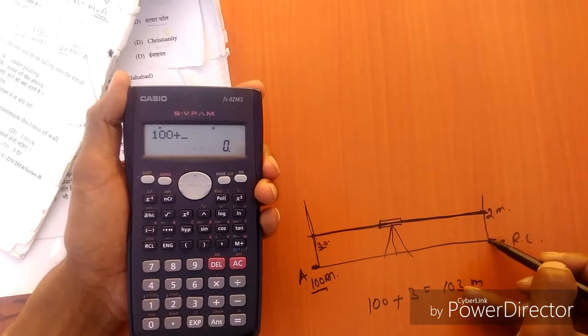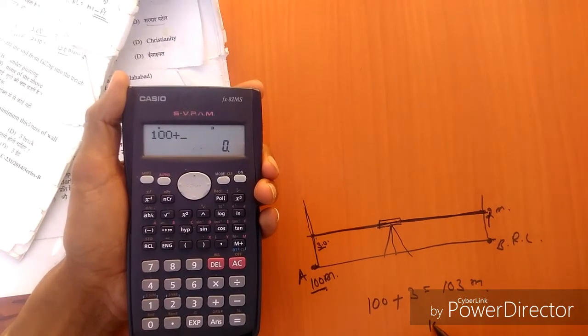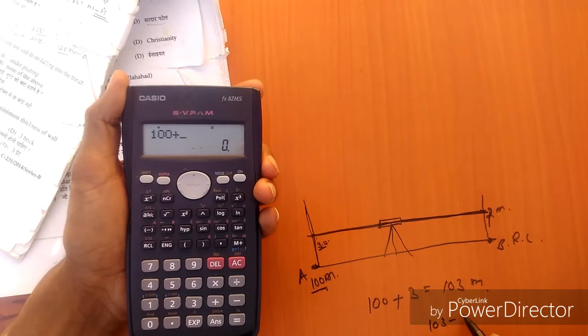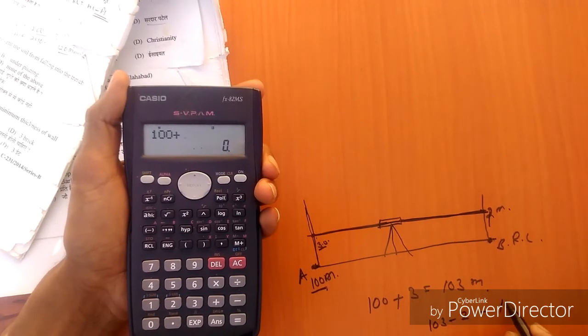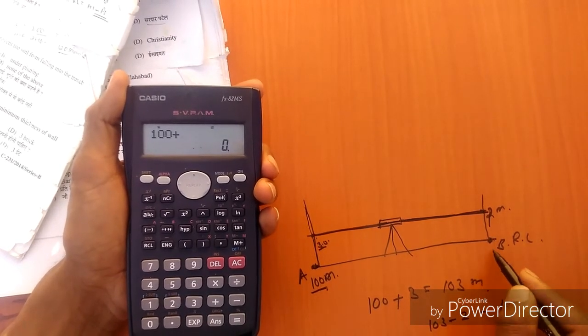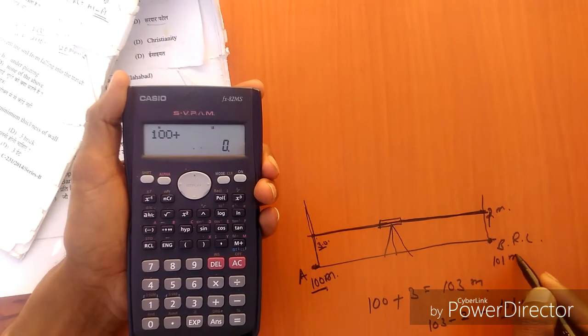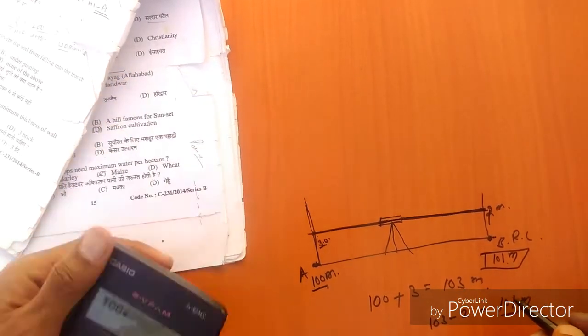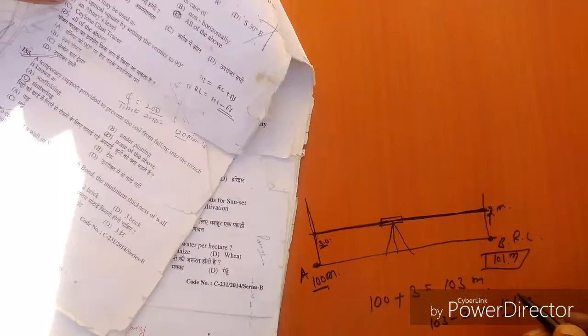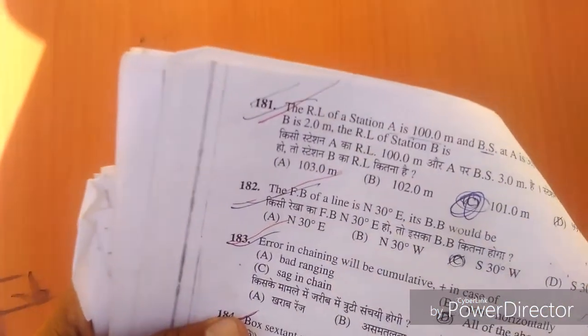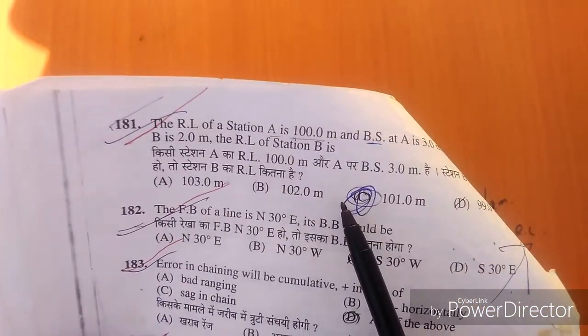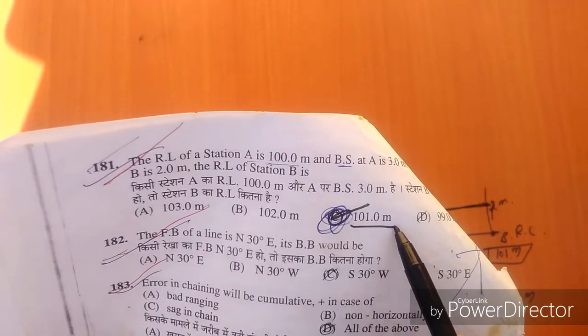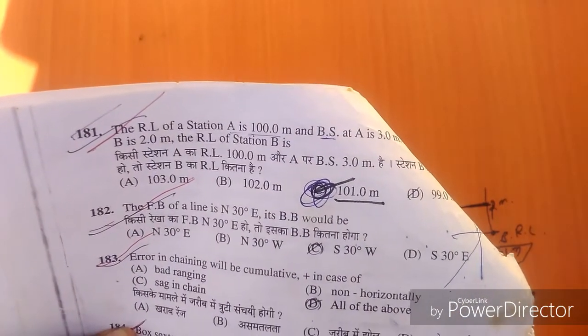That is equal to 101 meters. So RL of point B is equal to 101 meters. This is the right answer, 101 meters. Hope you have cleared this topic.